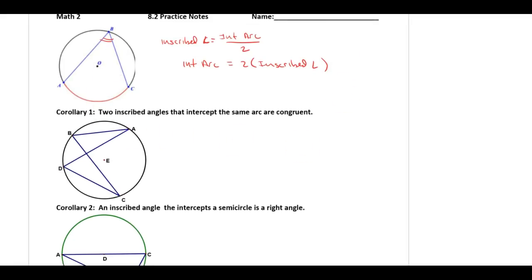The next corollary: Two inscribed angles that intercept the same arc are congruent. Looking at this inscribed angle that intercepts this arc, and this inscribed angle that intercepts the same arc, angle B must be congruent to angle D. If this arc was 100 degrees, this angle would be half of that, 50, and this angle would also be 50, showing the angles are congruent.